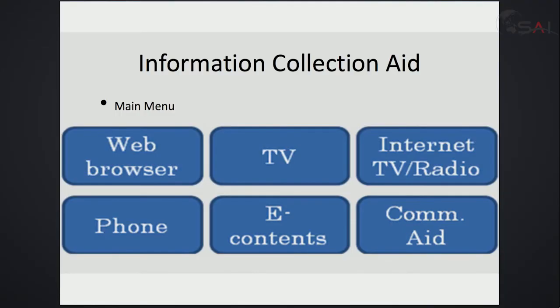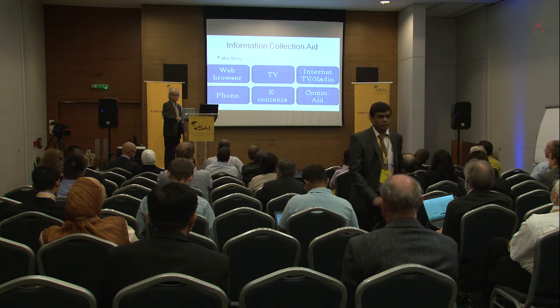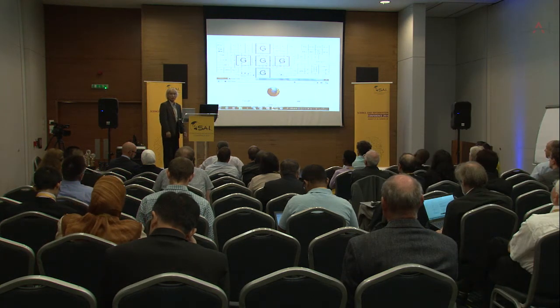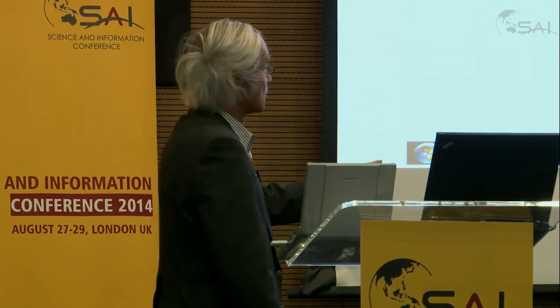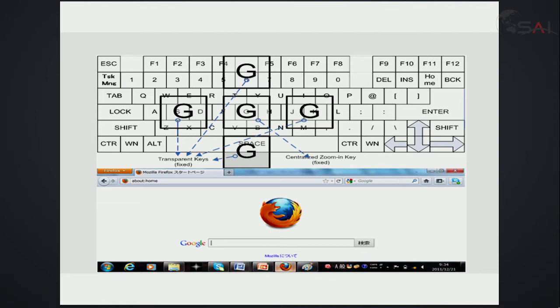Another application is information access. An ALS patient lying on the bed can watch TV, listen to the radio, access e-learning content, e-books, e-comics, use a phone-in, browse the web with a search engine, and use a communication aid — all available using the moving keyboard and computer input by sight.